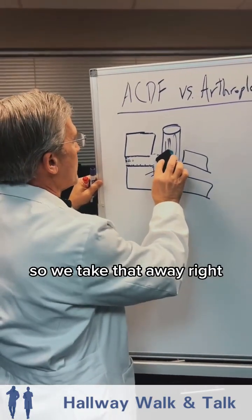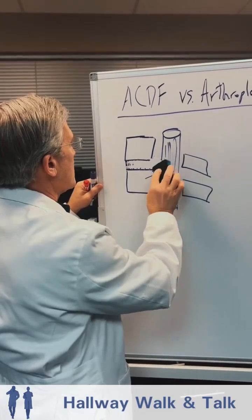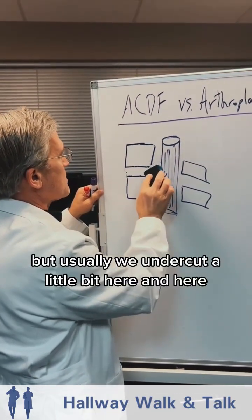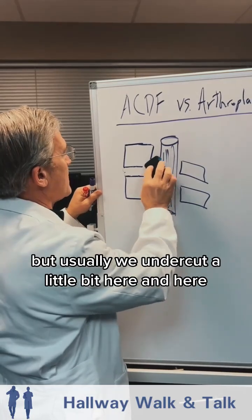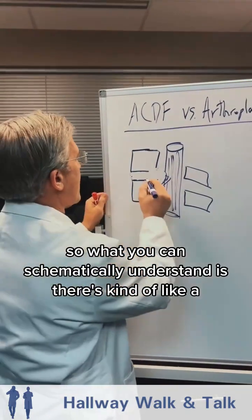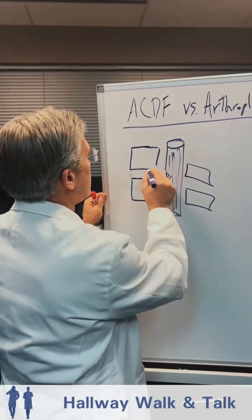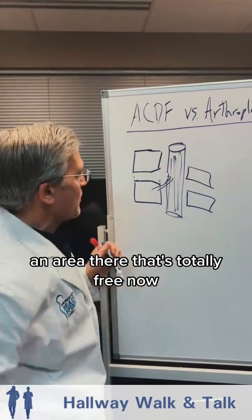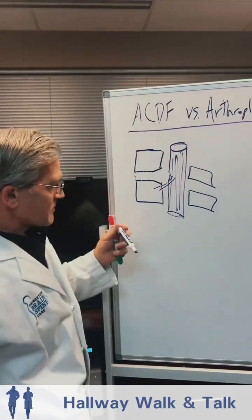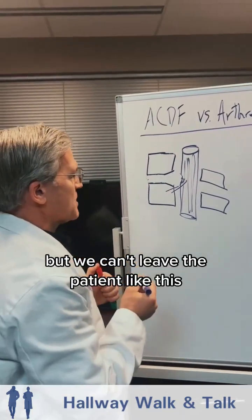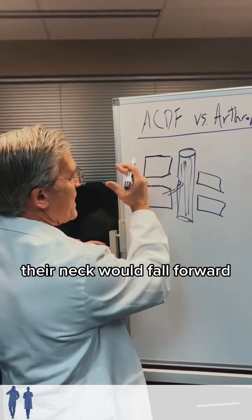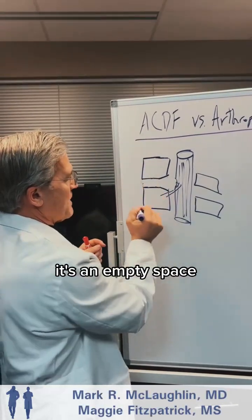We take that herniation away, and there'd be no disc there. Usually we undercut a little bit on each side, so schematically there's an area that's totally free. The spinal cord is now decompressed, but we can't leave the patient like this because their head and neck would fall forward — this would be a collapsed empty space.